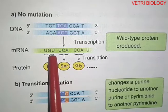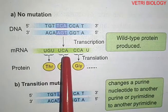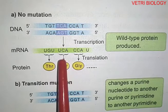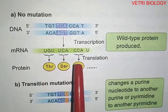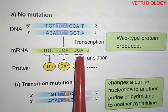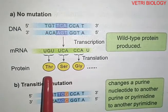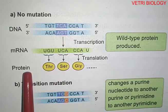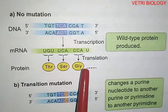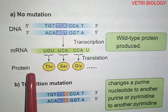During translation, UGU is translated to produce threonine. UCA is translated to produce serine. CCA is translated to produce glycine. These amino acids are linked together to form a protein polymer. This represents the normal process of protein production.